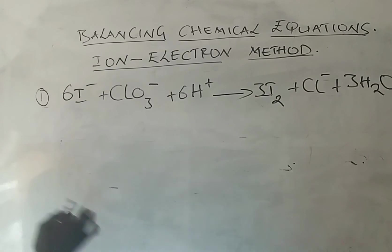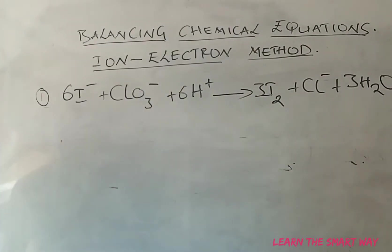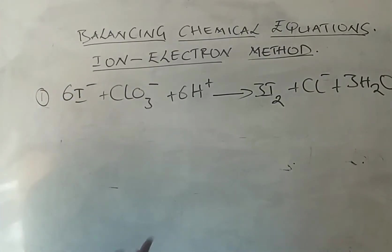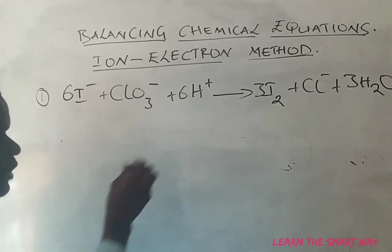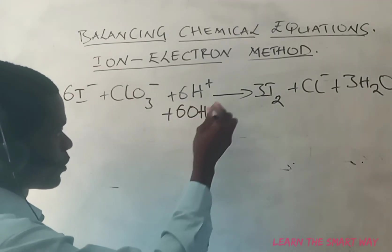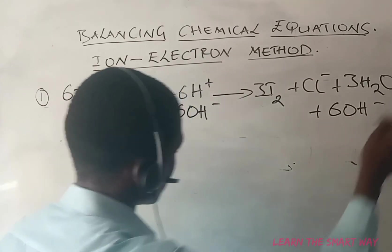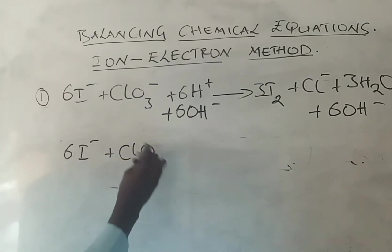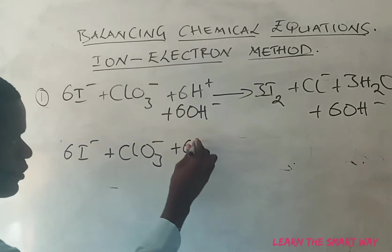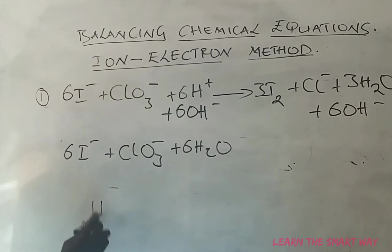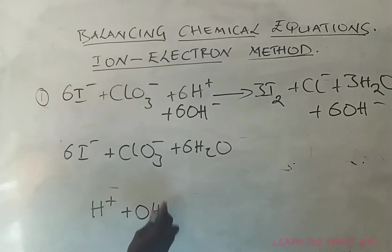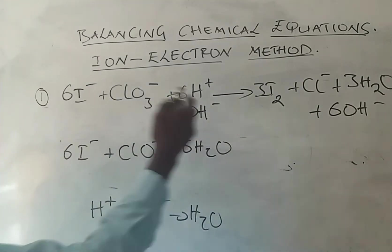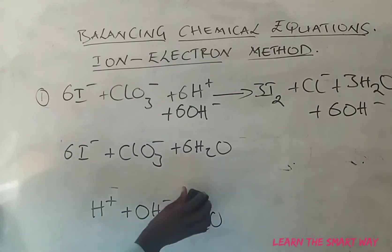When asked to balance in basic media, we don't want to see hydrogen ions since they indicate acid — we want hydroxide ions instead. So we add six hydroxide ions to both sides of the equation. Since H⁺ plus OH⁻ gives water, six hydrogen ions combined with six hydroxide ions produces six water molecules on the left side.